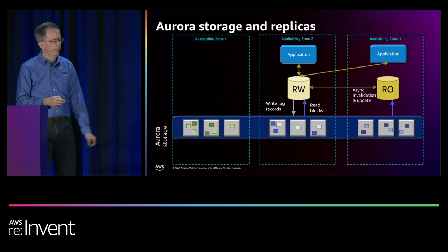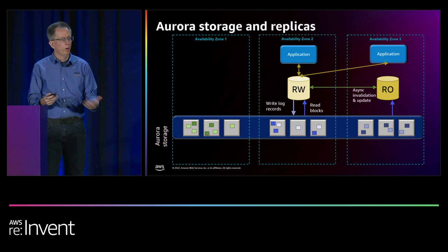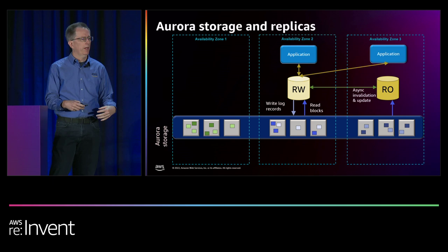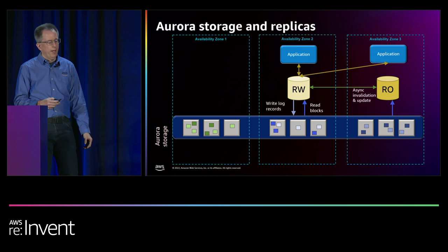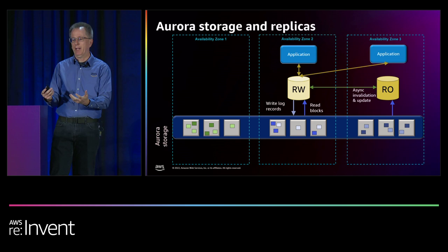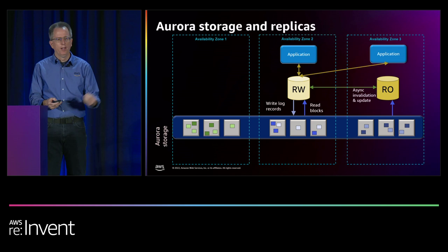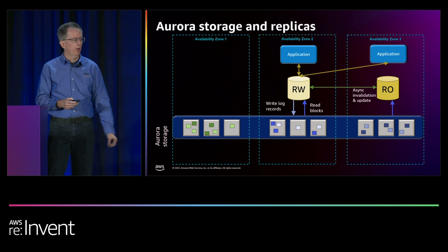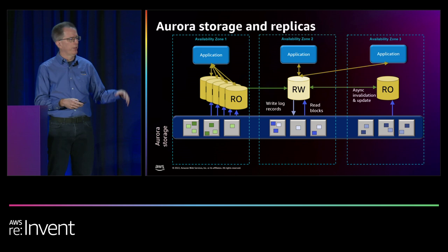For high availability, you want somewhere to fail over to, or you just want to do reads on another instance for scale. We allow read-only nodes, or replicas. The interesting thing about Aurora is we don't duplicate the storage when you have a replica — we just read from the clustered storage. That read-only node has memory and buffer cache that needs to be kept up to date. We send messages from the read-write node to the read-only node, asynchronously invalidating and keeping memory up to date, with just a few milliseconds of lag. You can have up to 15 read-only nodes.